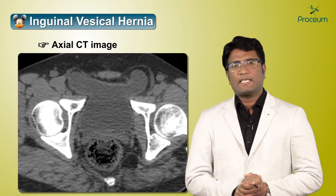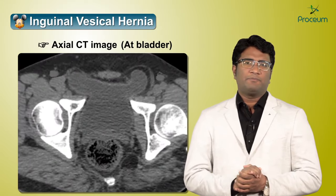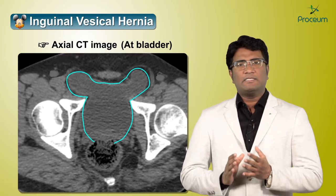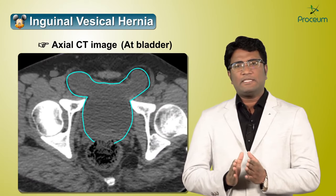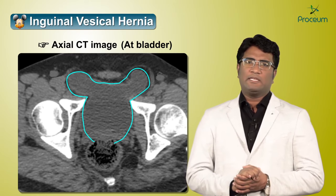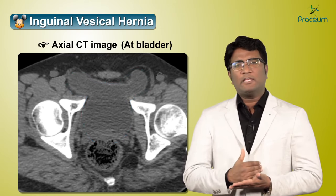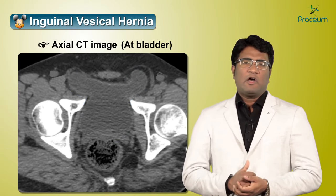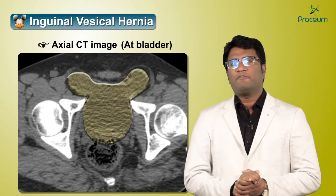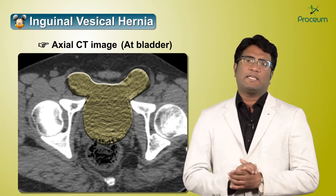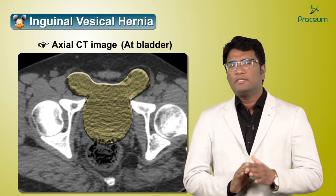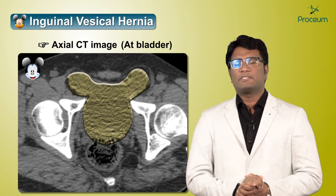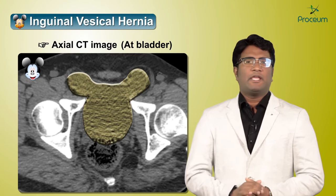Another site where we can see a Mickey Mouse appearance is on axial imaging at the level of the pelvis or bladder. On a CT scan at the level of the bladder, when the bladder is distended and shows herniation into the inguinal regions, this inguinal vesical hernia on axial imaging takes the shape of a Mickey Mouse. So, this is all the places where we see the Mickey Mouse sign in radiological imaging.